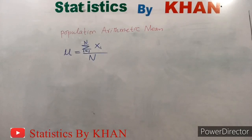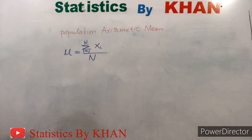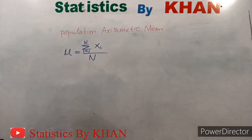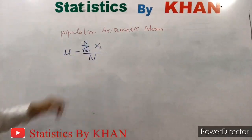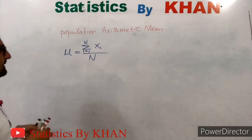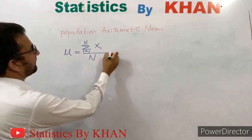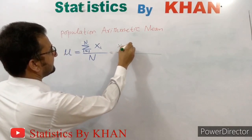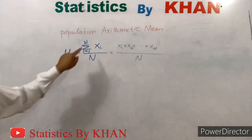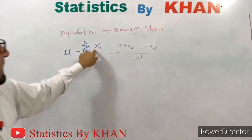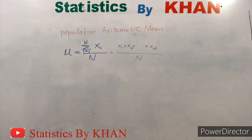In the population case, we go up to capital N. If we have n observations x1, x2, x3, and so on up to xN, the expanded form is x1 plus x2 plus x3 plus and so on up to xN, divided by N. The compact summation form is the alternative way of writing that expanded form. This compact form and the expanded form are equivalent — this is the formula for the population arithmetic mean.